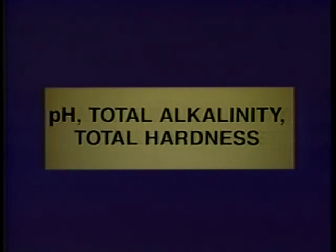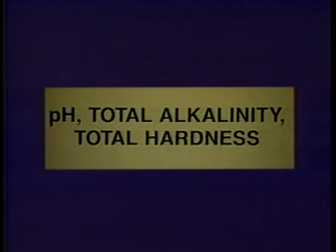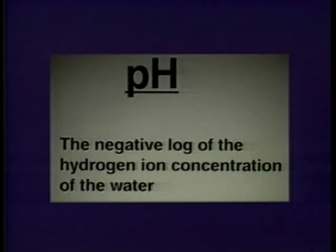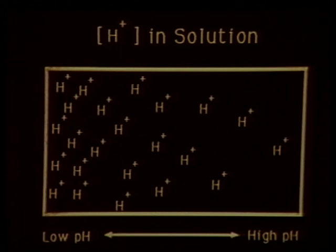pH, total alkalinity, and total hardness. The ionic composition of water is so important because it affects a number of water quality factors. Three of these parameters — pH, total alkalinity, and total hardness — will now be discussed. The pH is a measure of the hydrogen ion concentration and indicates if the water is acidic or alkaline. Since pH represents the negative log of the hydrogen ion concentration, the lower the pH, the greater the number of hydrogen ions in the water, while higher pH indicates lower numbers of hydrogen ions.